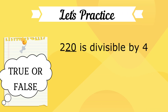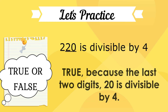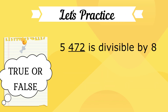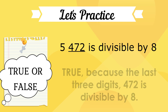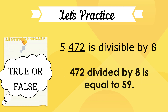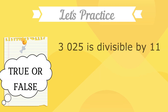Let's practice. True or false? 220 is divisible by 4. The answer is true, because the last 2 digits, 20, are divisible by 4. True or false? 5,472 is divisible by 8. That is true, because the last 3 digits, 472, are divisible by 8: 472 divided by 8 equals 59.